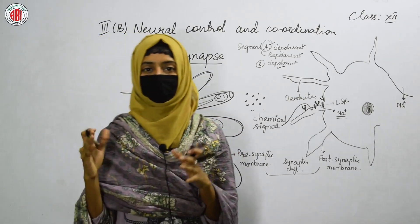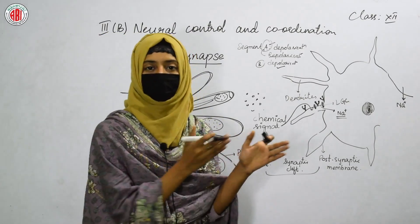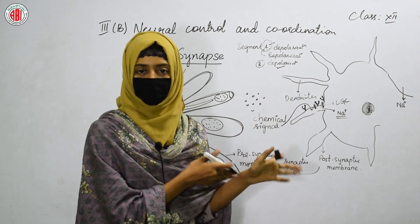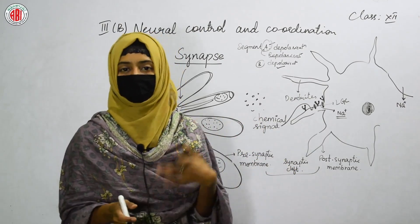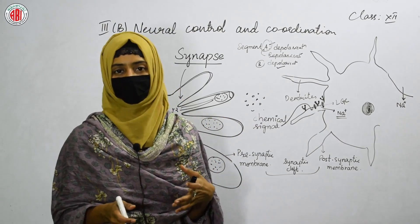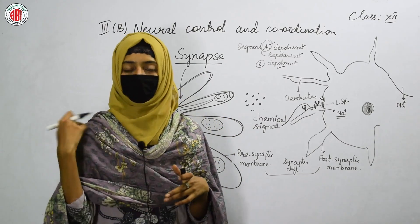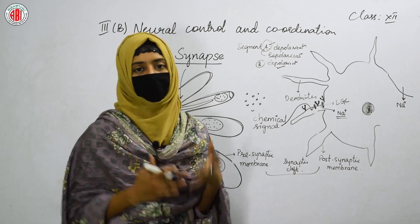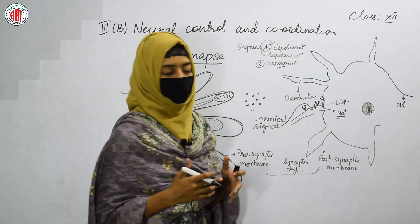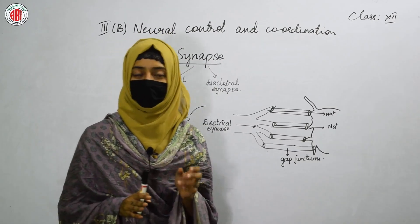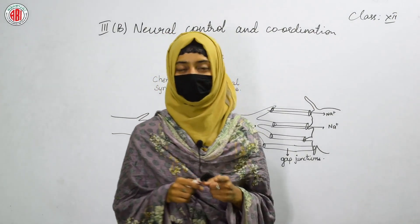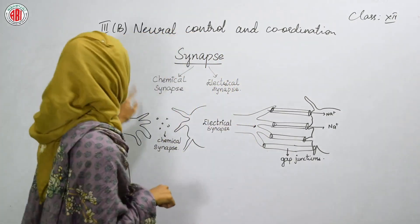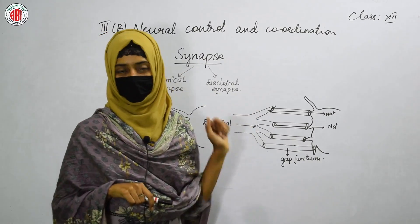This is how the signals can be transferred from one neuron to another, another to a third one, and then a fourth one. Likewise, the signals can be transmitted and ultimately received by the central nervous system in order to analyze that information. Let us talk about the different types of synapse. Synapse is classified into two main types: one is chemical synapse and the other one is electrical synapse.